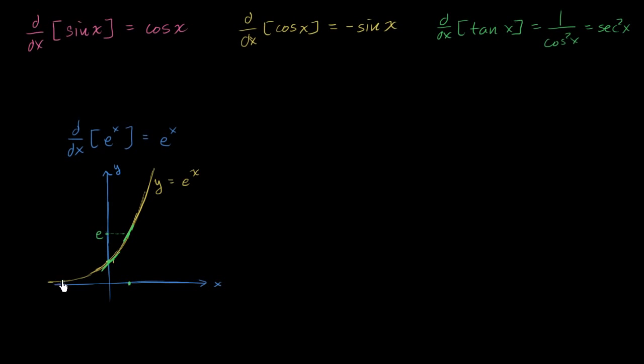At any point, right over here, the slope of the tangent line is equal to the value of the function at that point. This is amazing. This is what is so cool about e.